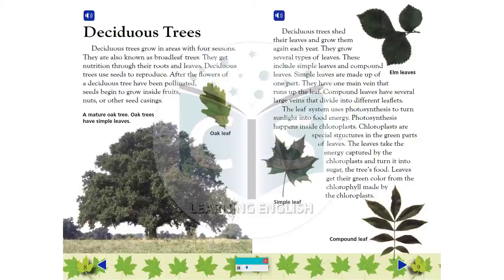Deciduous trees shed their leaves and grow them again each year. They grow several types of leaves. These include simple leaves and compound leaves. Simple leaves are made up of one part. They have one main vein that runs up the leaf. Compound leaves have several large veins that divide into different leaflets. The leaf system uses photosynthesis to turn sunlight into food energy.